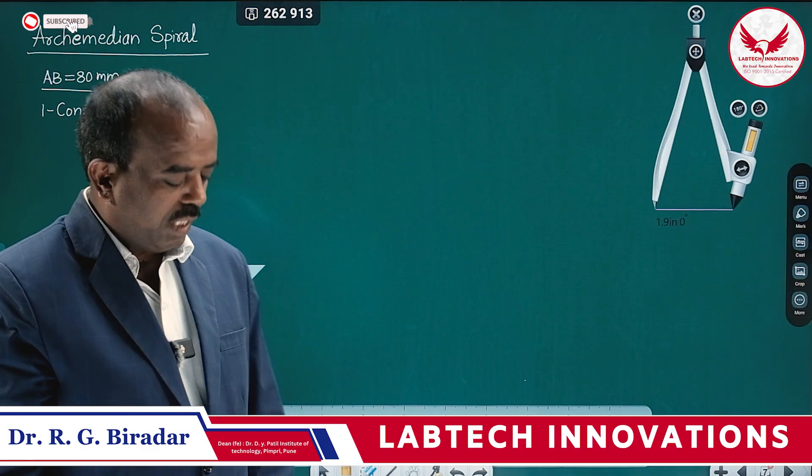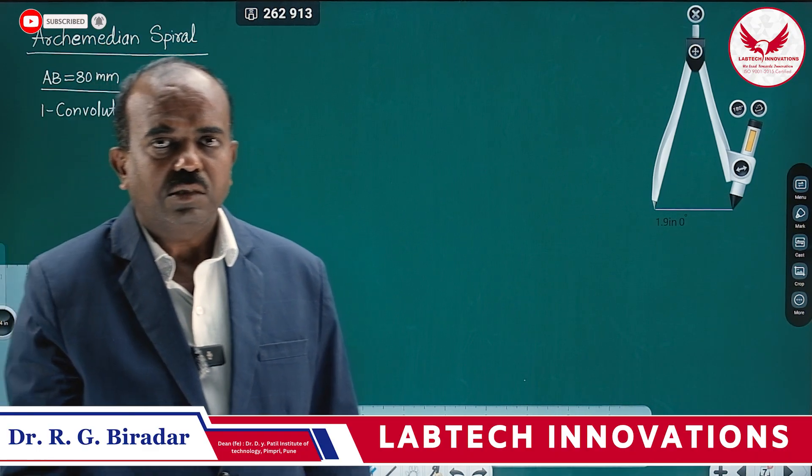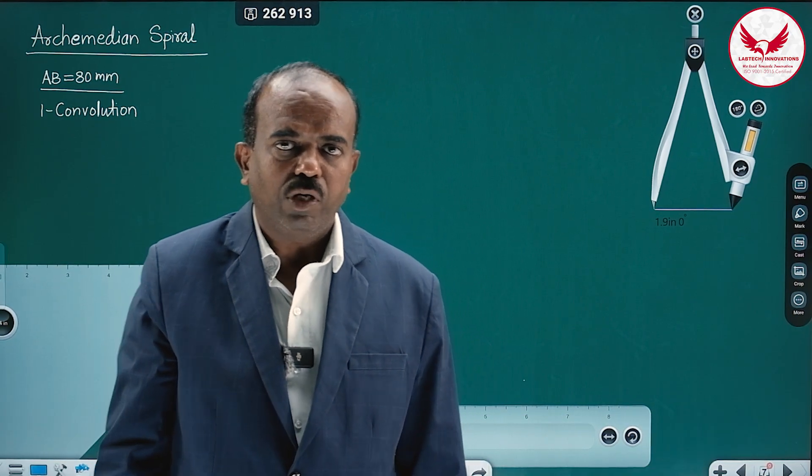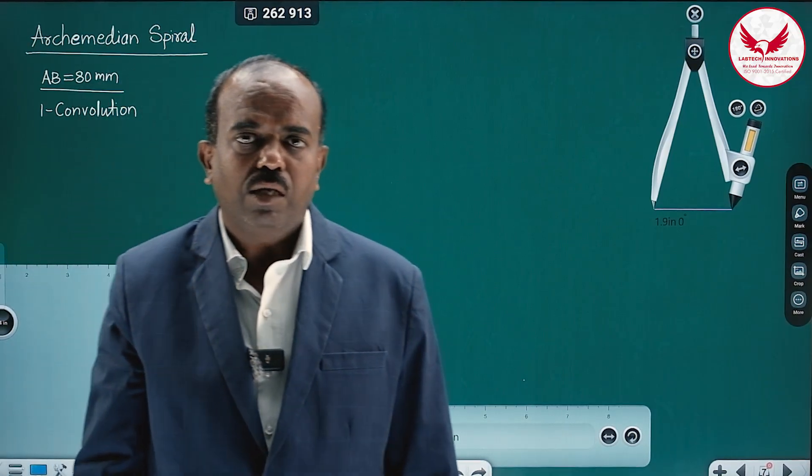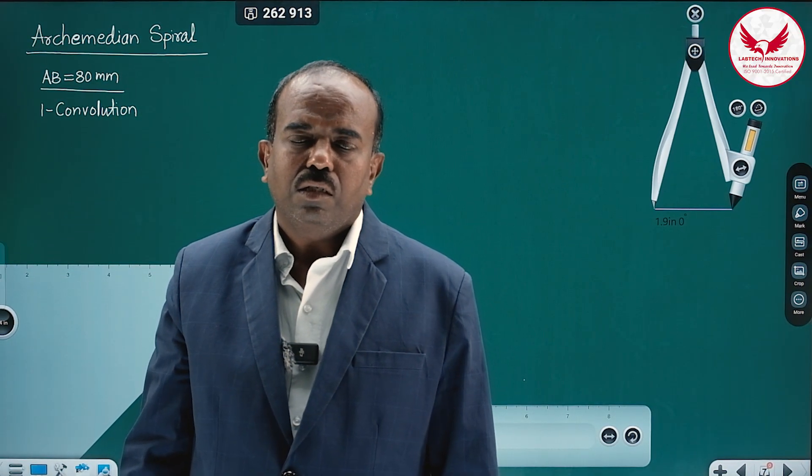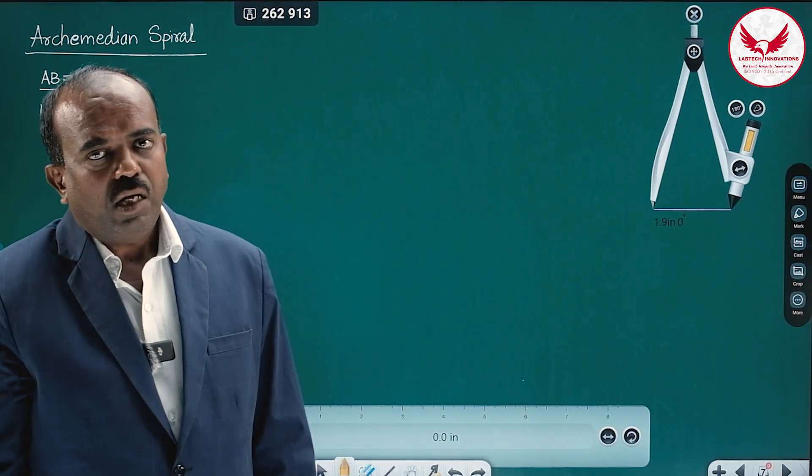The requirement of the Archimedean spiral is: what is the length between two points? One is going to be a fixed point, the other is going to be a moving point or length of the line. So that is 80 mm and one convolution means 360 degree rotation.